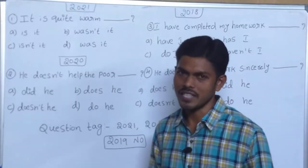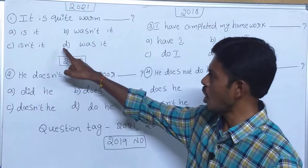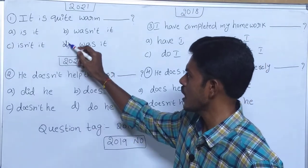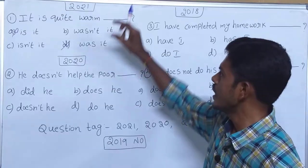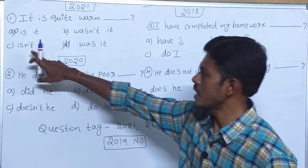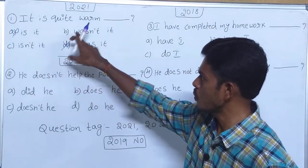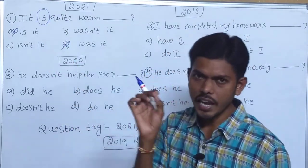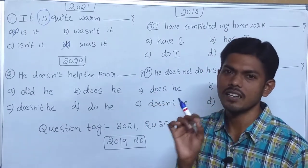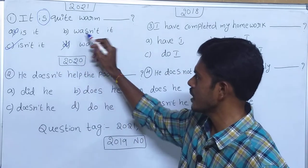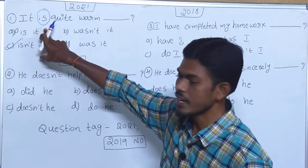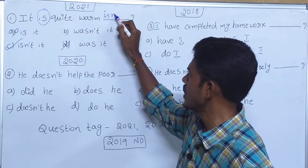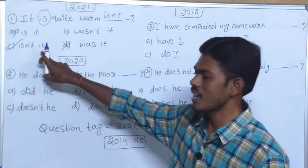The first sentence is positive, so our answer must be negative. Options B and C are negative — the remaining are positive, so those are not our answers. Which helping verb is in the sentence? 'Is.' So we need the same helping verb: 'isn't it.' We are not taking 'wasn't it' because the sentence uses 'is,' so we need 'isn't.' C is our answer.